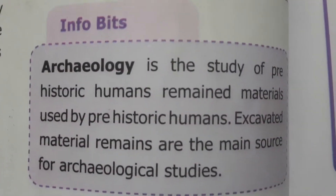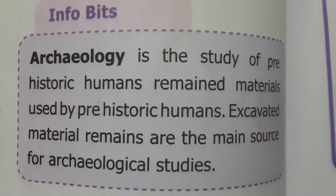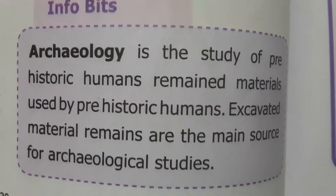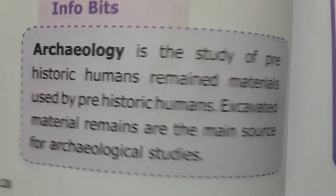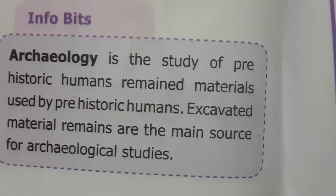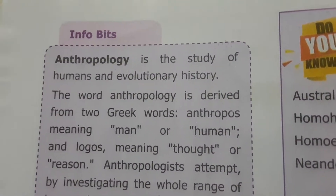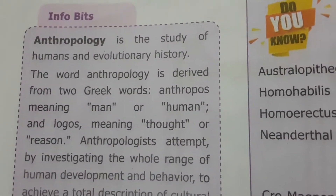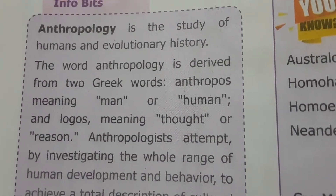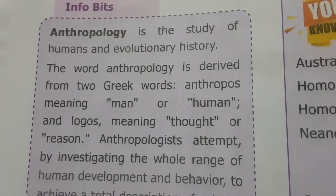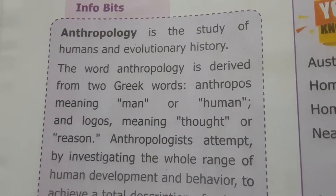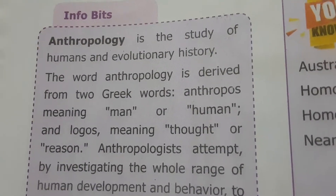So what is archaeology? It is the study of prehistoric humans and materials used by prehistoric humans. Excavation materials and remains are the main sources for archaeological studies. And what is anthropology? Anthropology is the study of humans and evolutionary history. It is derived from the Greek words 'anthropos' meaning man or human, and 'logos' meaning thought or reason.